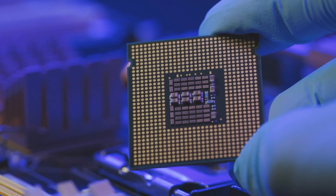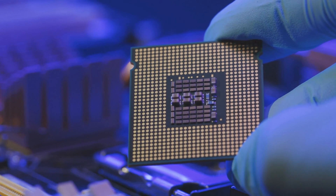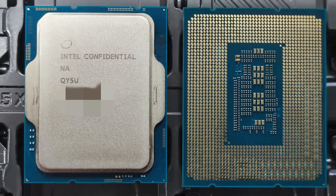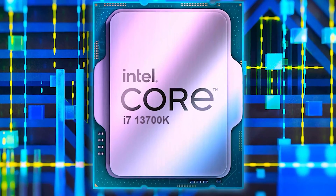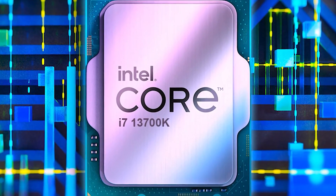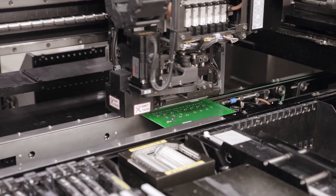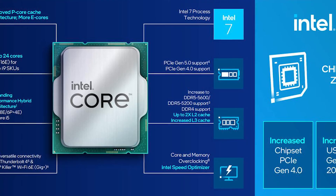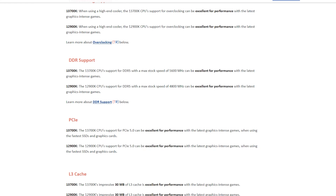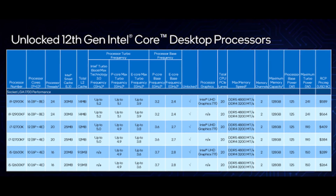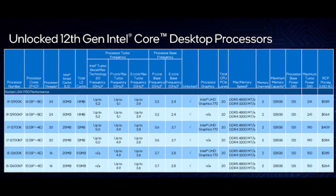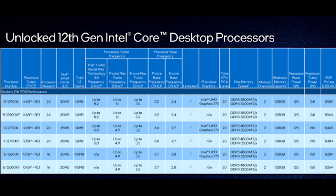The i7-13700K offers an identical core count to the flagship of the 12000 series. However, each of the eight P-Cores on the i7-13700K is a new-gen Raptor core featuring larger 2 megabyte dedicated L2 caches, compared to 1.25 megabytes on the Golden Cove P-Cores. Each of the two Gracemont E-Core clusters also gets four megabytes of L2 cache shared amongst the four E-Cores in the cluster, up from two megabytes per cluster on Alder Lake.